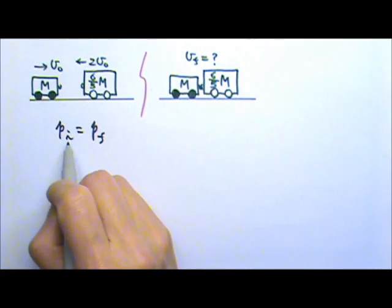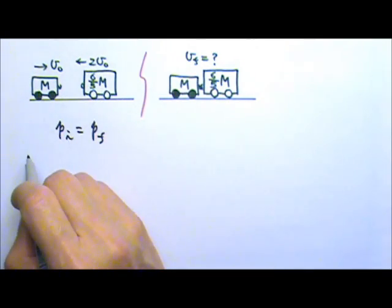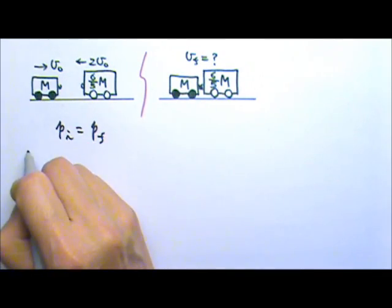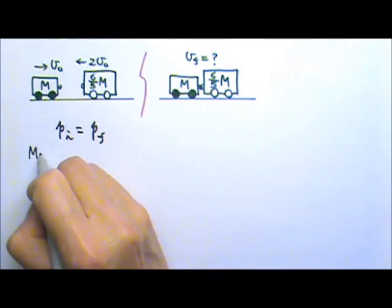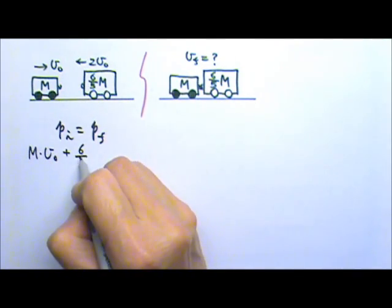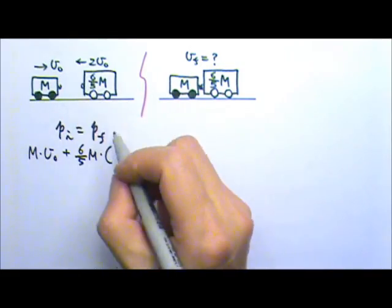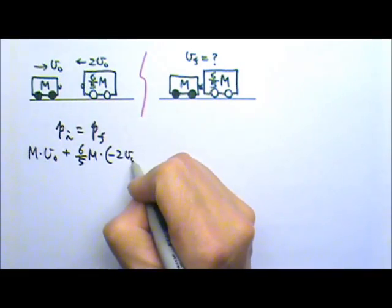So the initial momentum is the momentum of these two carts added together. The first cart has a mass m, velocity VO. The second cart has a mass of 6 fifths m, velocity is negative 2 VO.